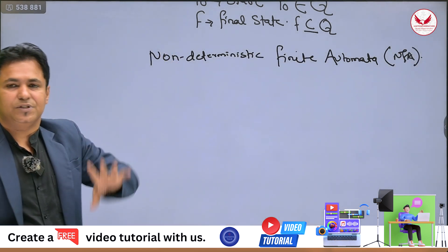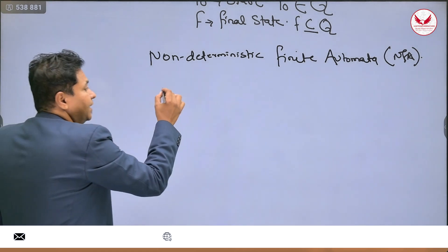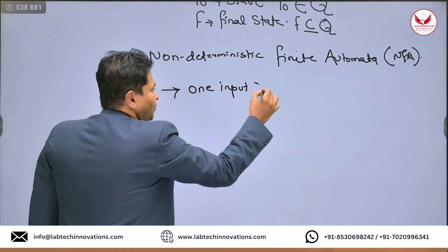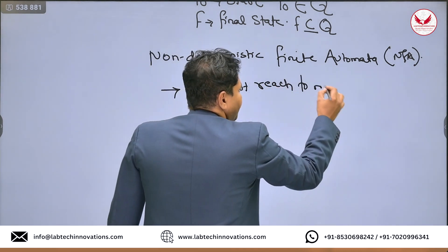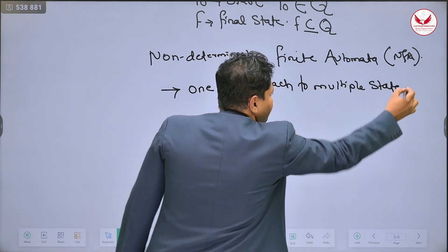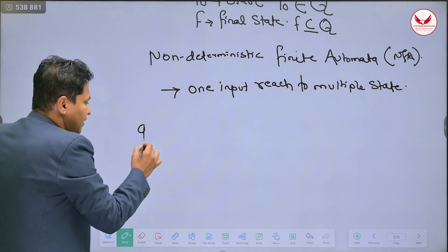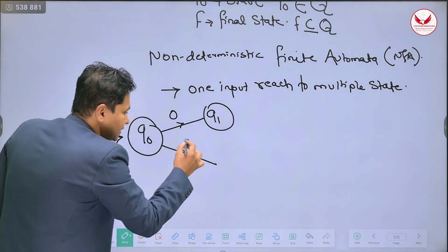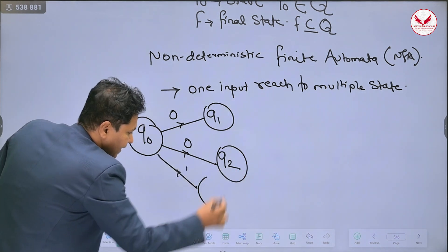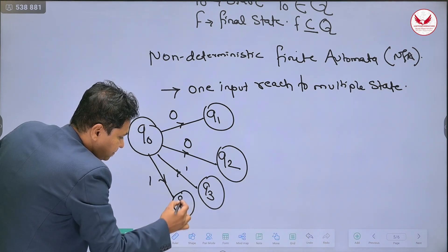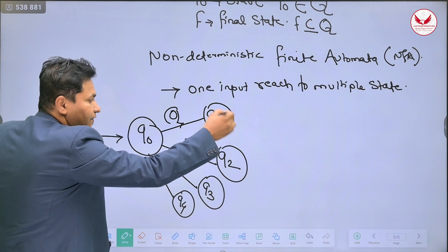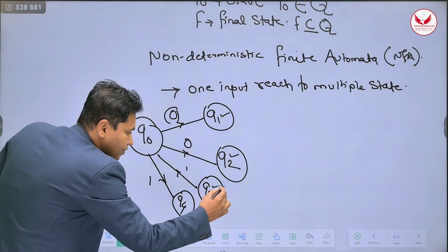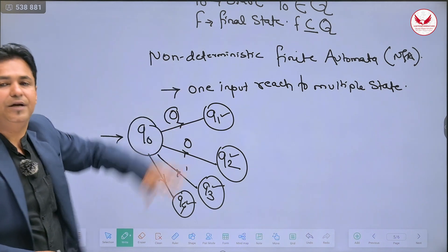In DFA, by processing only one input you can reach the next state. But in NFA, by processing one input the machine can reach multiple states. For example, in Q0, by processing 0 you can reach Q1 state or Q2 state. By processing 1, you can reach Q3 state or Q4 state. So by processing only one input, the machine reaches multiple states. That is the non-deterministic finite automata.